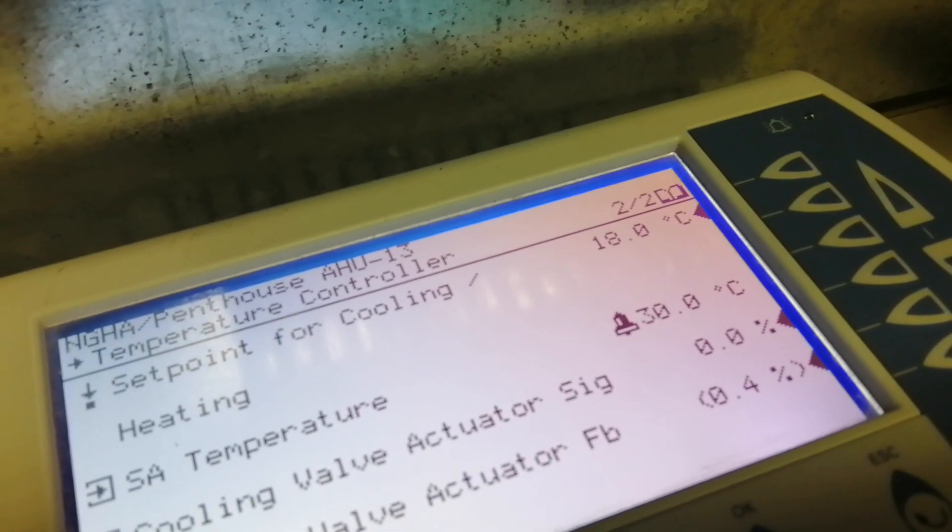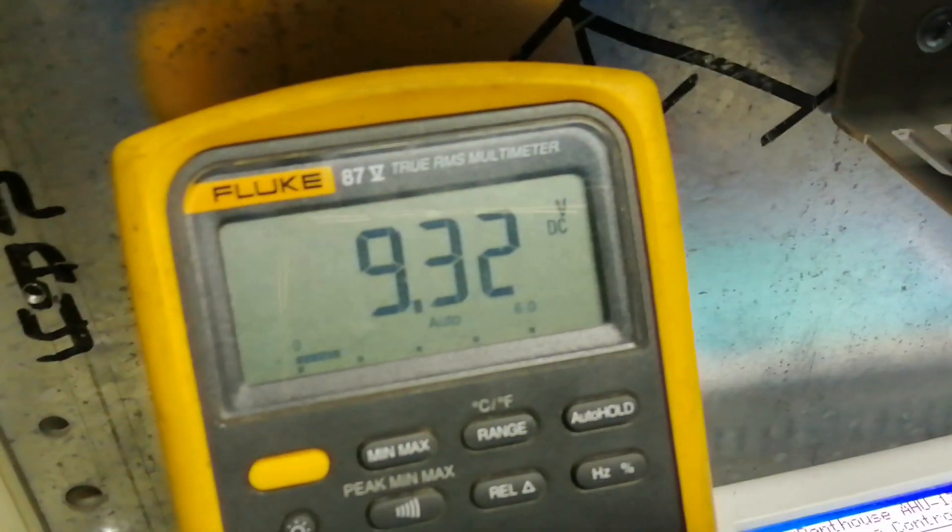Temperature high alarm is activated at 30 degrees centigrade with an equivalent of 9.32 voltage signal.